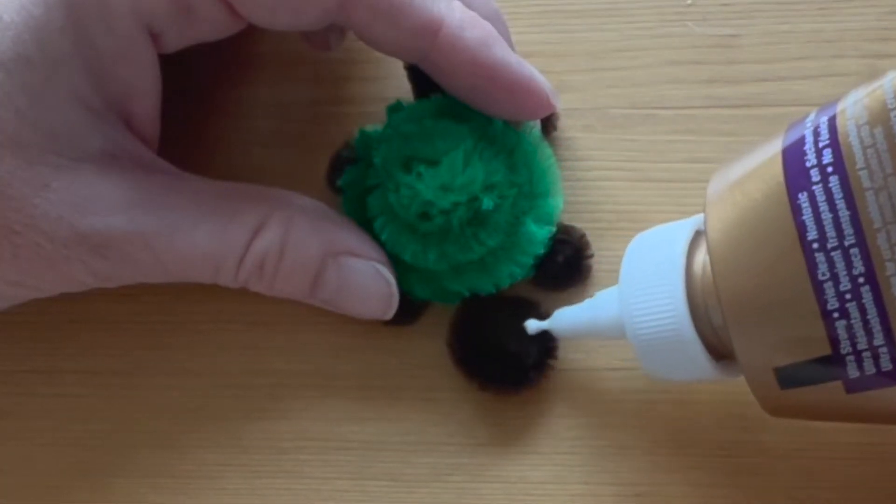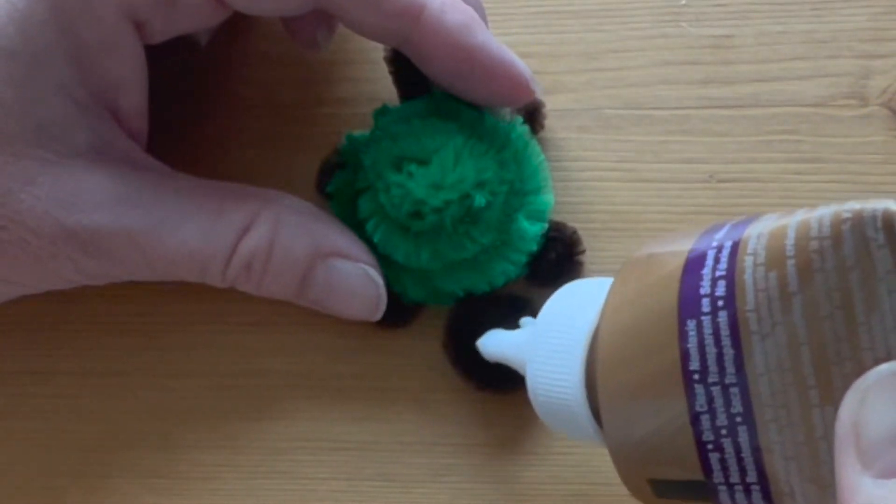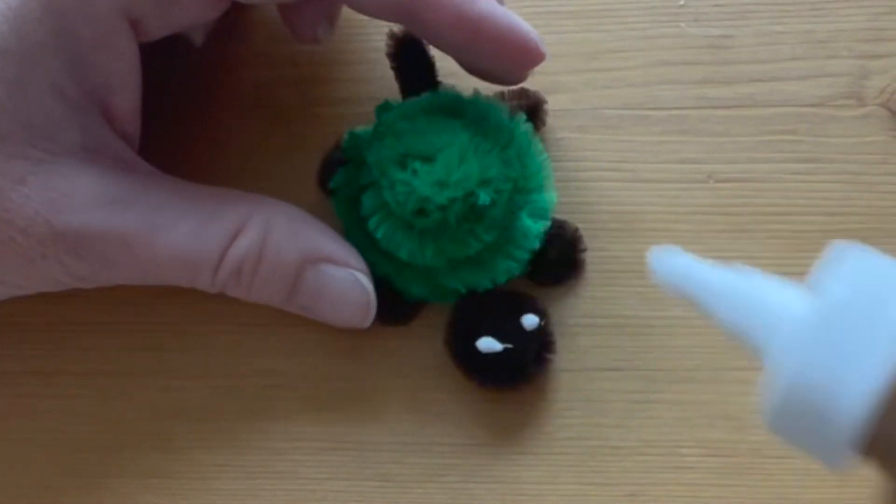The last step is to glue on some googly eyes. Use a thick white craft glue. Set the eyes far apart on the head.